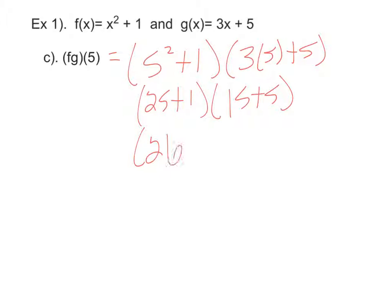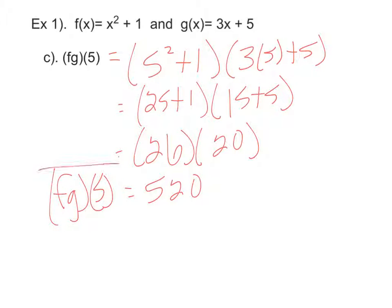So you get 26 times 20. And at first I thought this was going to be kind of a nightmare, but really 26 times 20, that's not too shabby, though you end up with 520. So F times G of 5 is what gets you 520. Nice.